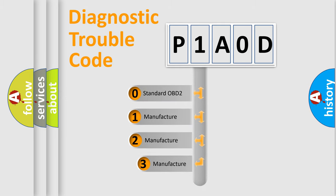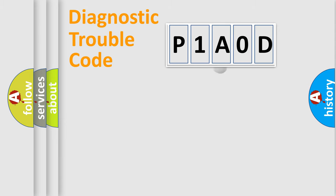If the second character is expressed as zero, it is a standardized error. In the case of numbers 1, 2, or 3, it is a more precise expression of the car-specific error.